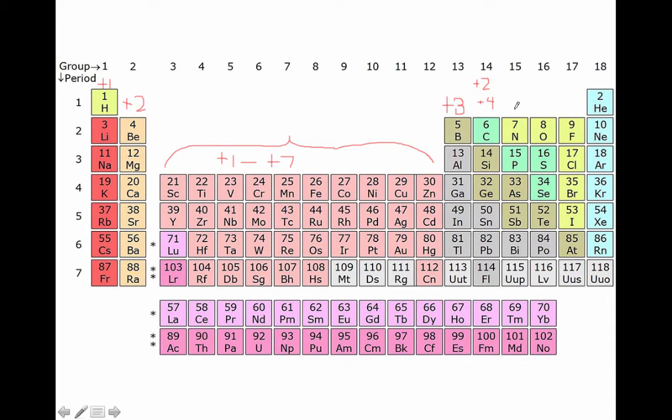So starting with column 15, this is where we have five valence electrons. And it's closer for us to go up to the noble gases than it is to lose the electrons to go back. So these elements are going to start forming our anions.